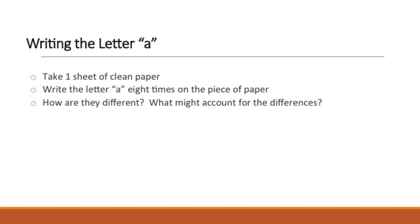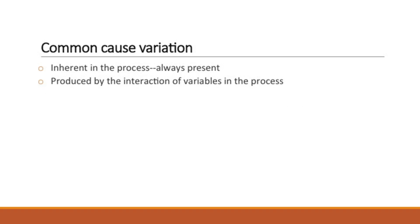What I'd like for you to do is take one sheet of clean paper and write the letter A eight times. As you look at how you wrote the letter, you'll notice that there's variation. How are these letters different and what might account for the differences? This is known as common cause variation. It's inherent in the process, it's always present, and it's produced by the interactions of the variables in the process — how you hold the pen, for example, or the pressure of the pen on the paper.